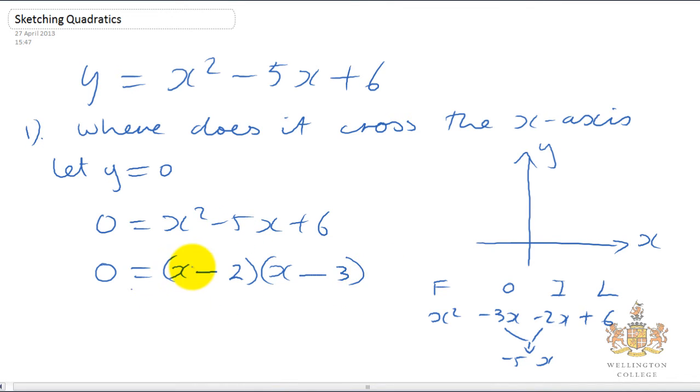We've now factorized this. So we've got this number here times by this number here. You can imagine x minus 2 is a number, x minus 3 is a number. And you've times those two numbers together to get 0. So one of them must be 0. So either x minus 2 must equal 0 or x minus 3 must equal 0. These two things timed together must equal 0. One of them must be 0.